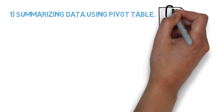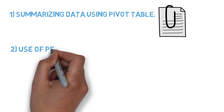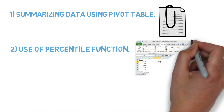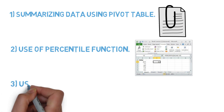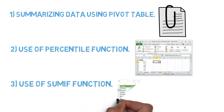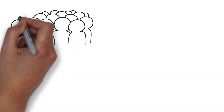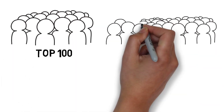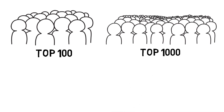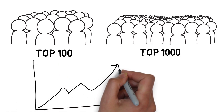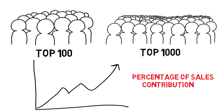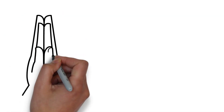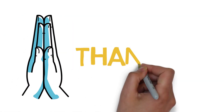The skills utilized in this analysis are: summarizing data using a pivot table, use of the PERCENTILE function, and use of the SUMIF function. In the next video, we will show how to find top 100 and top 1,000 customers and the percentage sales contribution of these customers. The data and the explainer video of this analysis can be downloaded from the link below. Thank you.